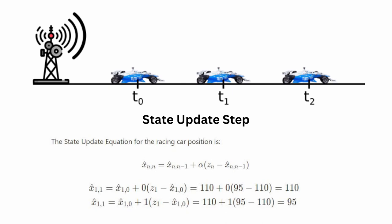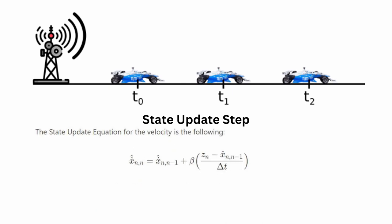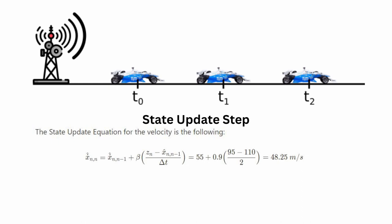Now for the other state update equation — velocity — since our state includes both position and velocity. The state update equation for velocity uses the difference in measurements divided by delta t, giving the velocity correction term scaled by beta. The value of beta is associated with the precision level of your antenna. If you have a lot of faith in your antenna measurement, beta will be high; otherwise it'll be low. For example, with beta equals 0.9 you get specific updated velocity values.